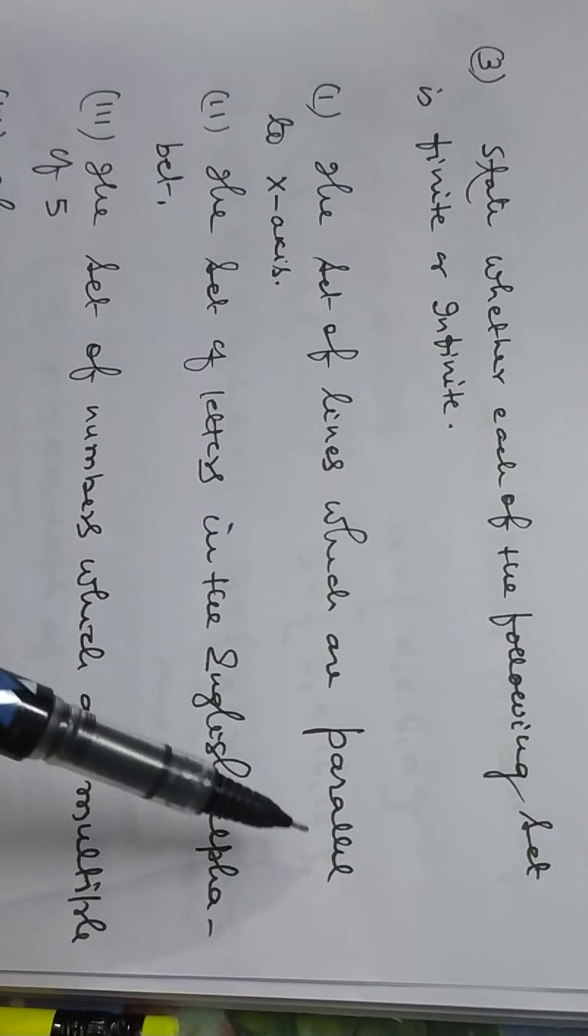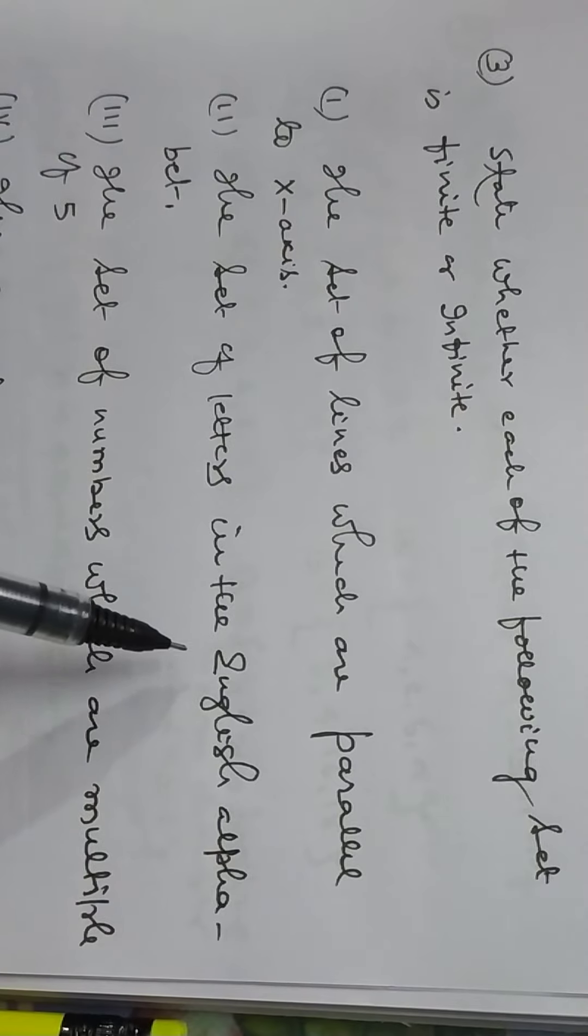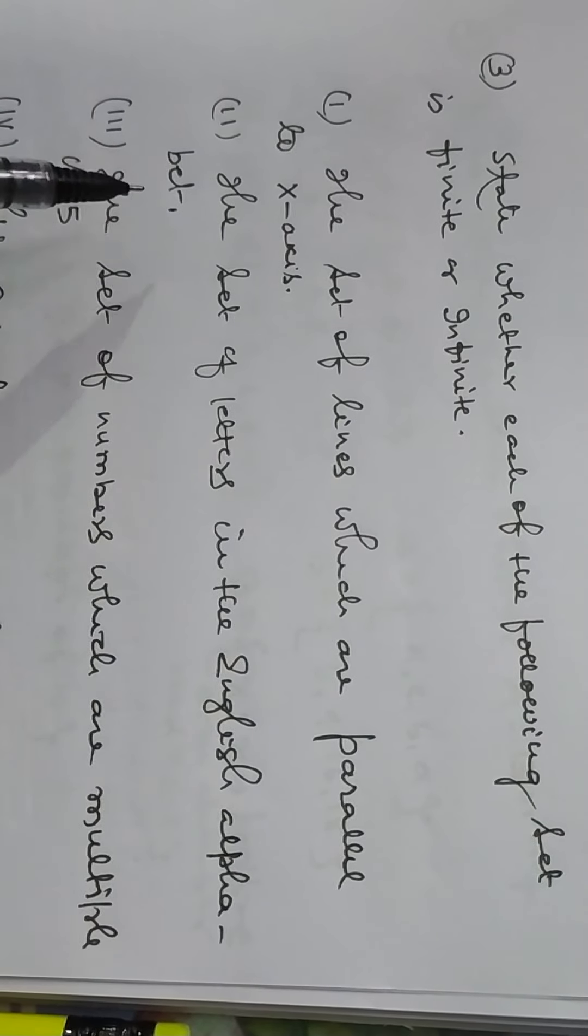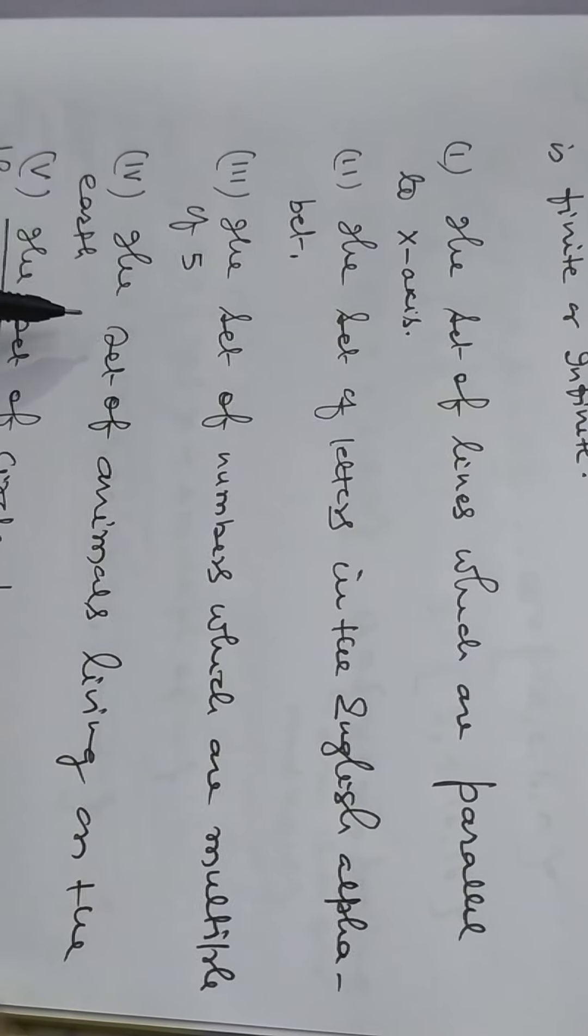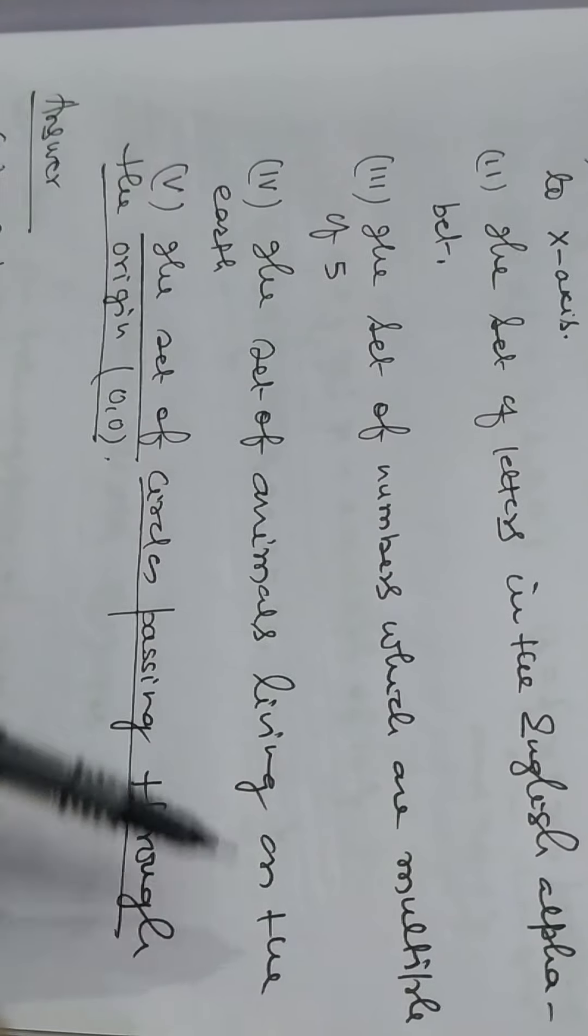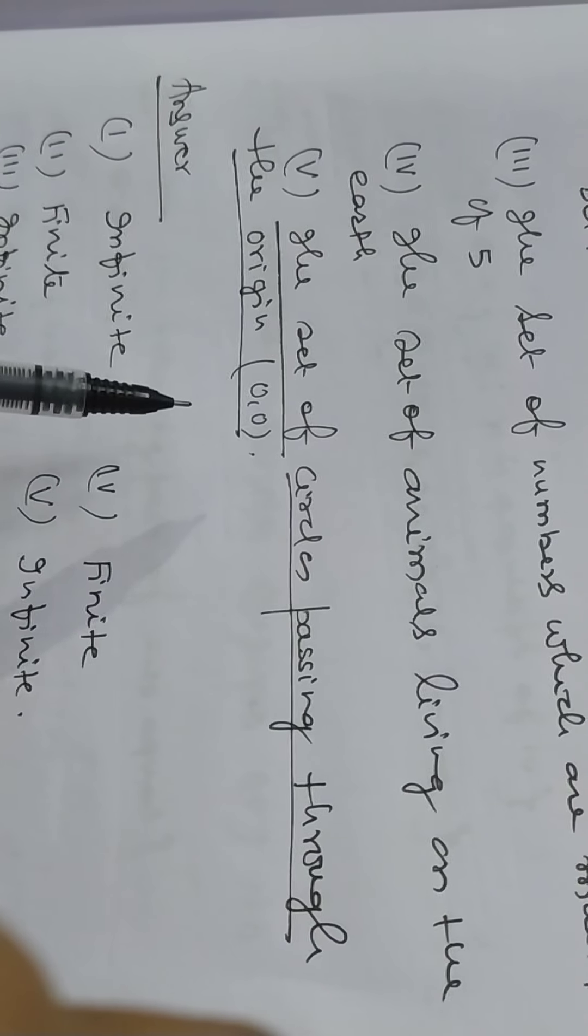A: the set of lines which are parallel to x-axis. B: the set of letters in the English alphabet. C: the set of numbers which are multiple of five. D: the set of animals living on the earth. E: the set of circles passing through the origin.